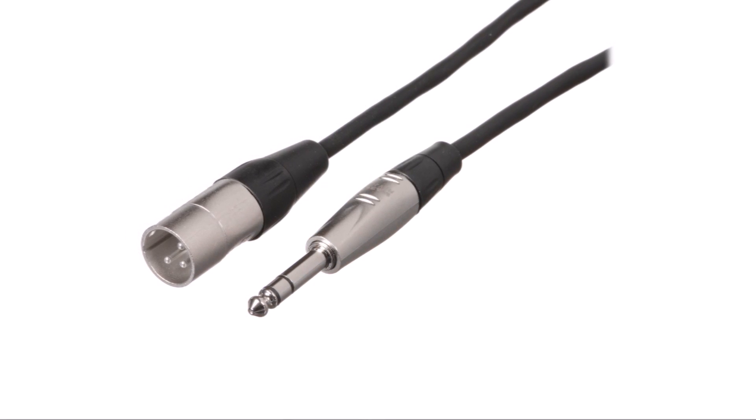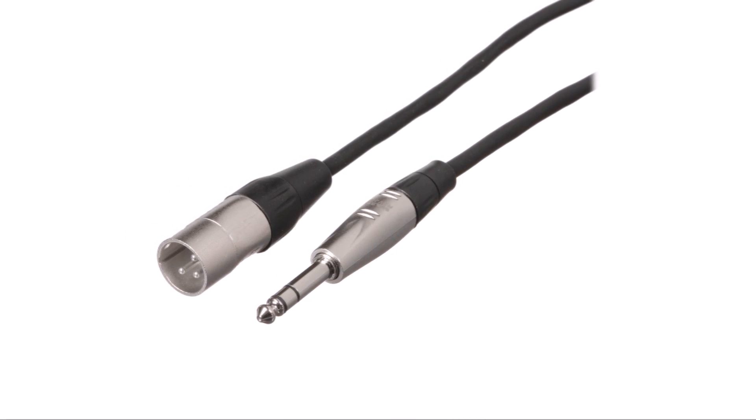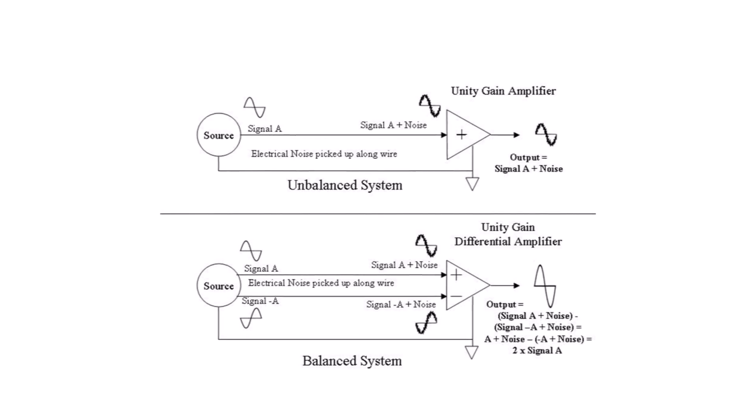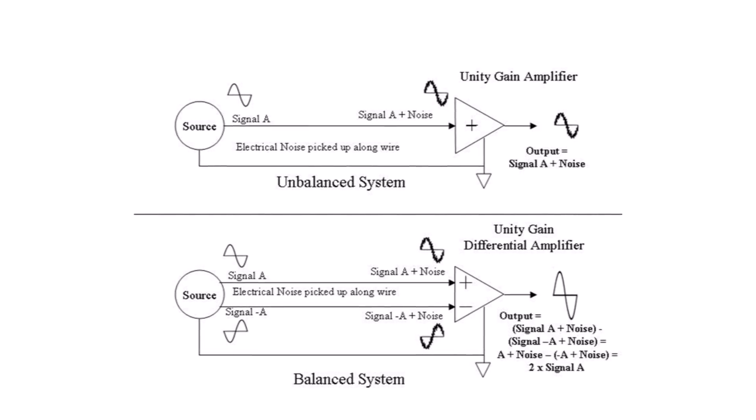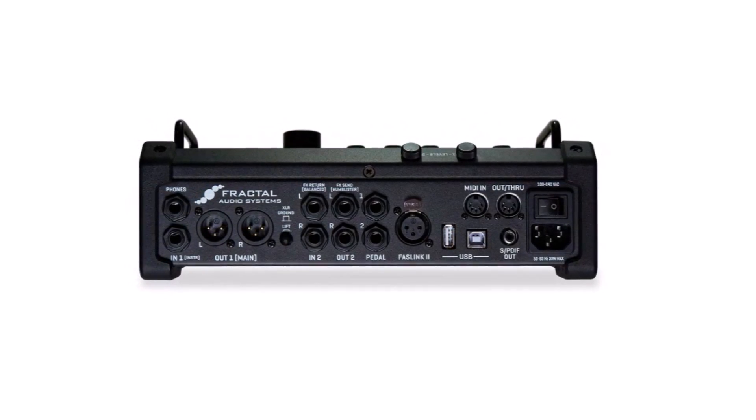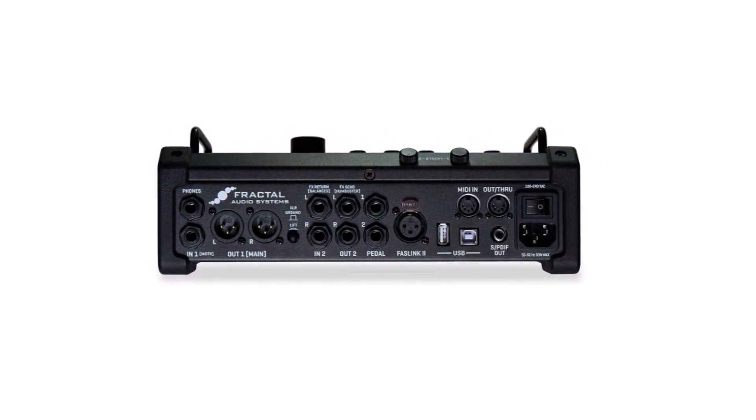The TRS connection also introduces the concept of balanced versus unbalanced signals. A regular instrument cable like this is almost always unbalanced — you've got one signal wire and a ground, and that's it. But with TRS connections or something like the classic XLR, we're talking about balanced signals, where we have not one signal line but a second one as well, flipped 180 degrees out of phase — or flipped polarity, more accurately. This helps cancel out any noise generated between the source and destination. That's why you'll often see both an unbalanced and a balanced output on amp modeling units, effects units, and that sort of thing.